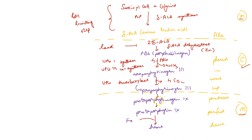Then coproporphyrinogen — now the cycle is entering the mitochondria — coproporphyrinogen 3 is converted to protoporphyrinogen 9, in the presence of enzyme coproporphyrinogen oxidase.